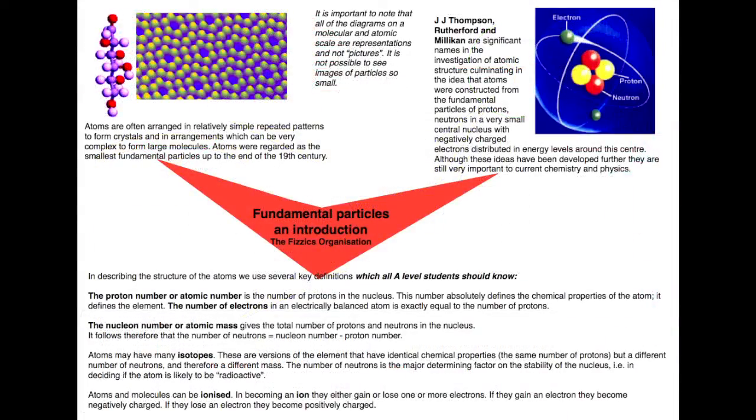The second sheet explains the basics of our current understanding of atomic structure, defining some key terms such as proton number, nucleon number, and isotope.